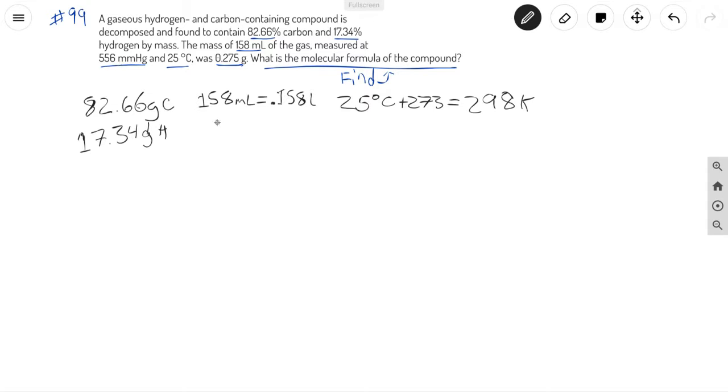And let's go ahead and convert 556 millimeters mercury. Conversion factor is 1 atm over 760 millimeters mercury, which gives us 0.732 atm.